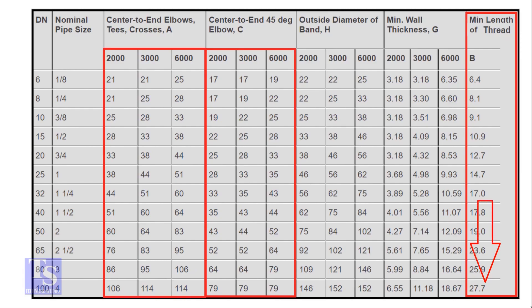The TDP length for both elbows is 27.7 millimeters. Let us round it to 28 millimeters.